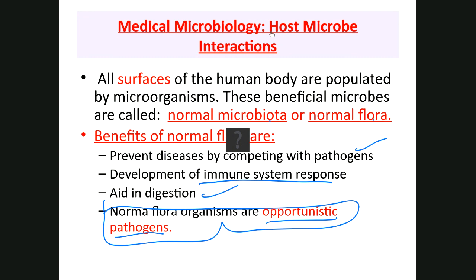For example, E. coli in the colon is fine and healthy to have. But if for whatever reason it moves to the urinary bladder, it could cause a urinary tract infection. A student asks whether this is why you need vaccinations when traveling outside the US. Yes — it has to do with preventing the reemergence of diseases. For example, typhoid fever is endemic in other parts of the world; if traveling there, they want you to take a vaccine so you don't bring it back.